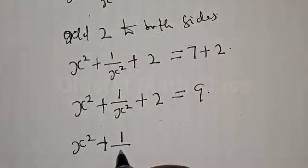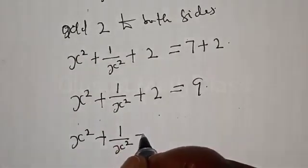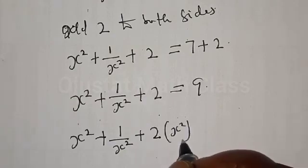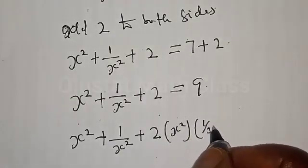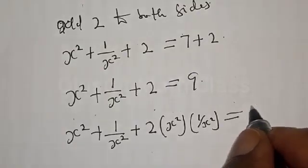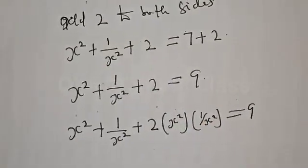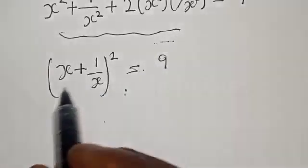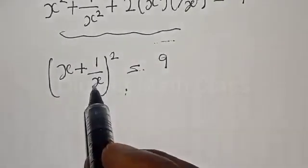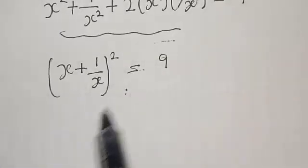Applying the same trick, s² plus 1/s² plus 2 times (s² multiplied by 1/s²) equals 9. The s² terms cancel, and we recognize the left-hand side as (s plus 1/s) squared, so (s plus 1/s) squared is equal to 9.